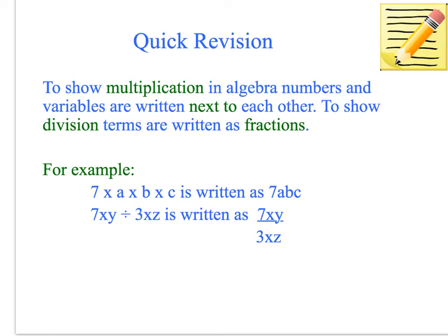So you can see the first example: 7 times A times B times C is written as 7ABC. That means we multiply 7 times A times B times C, but we don't need to write the multiplication signs. And to show division, terms are written as fractions. So 7XY divided by 3XZ is always written as 7XY over 3XZ when we're using algebra.